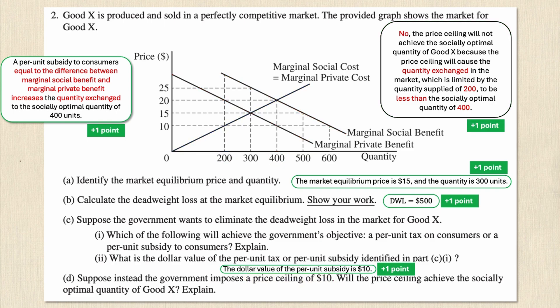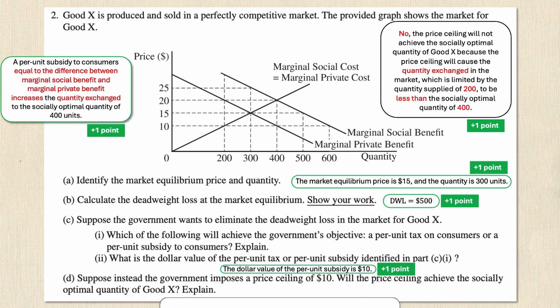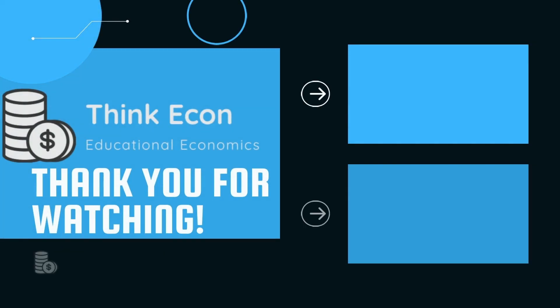That gives us a perfect five out of five points for a question that most people scored less than 50% on. If you have an externality question in front of you, you can use this as a model for a complete answer. I'll link this test question and the AP solutions in the description — the College Board makes all of that available. If you found this video helpful, please like, subscribe, and let us know in the comments what economic topics or homework questions you'd like us to cover next.